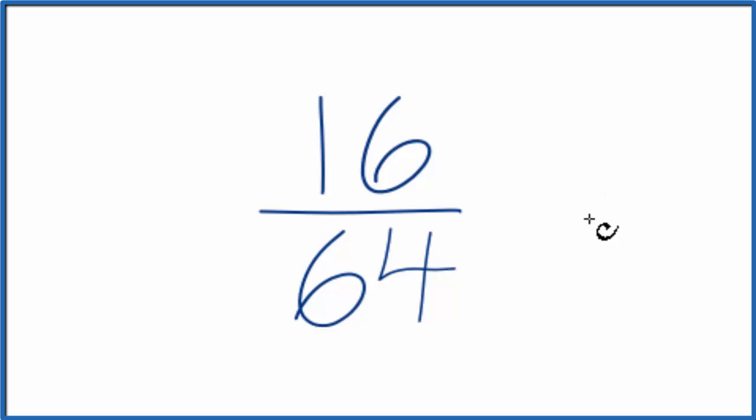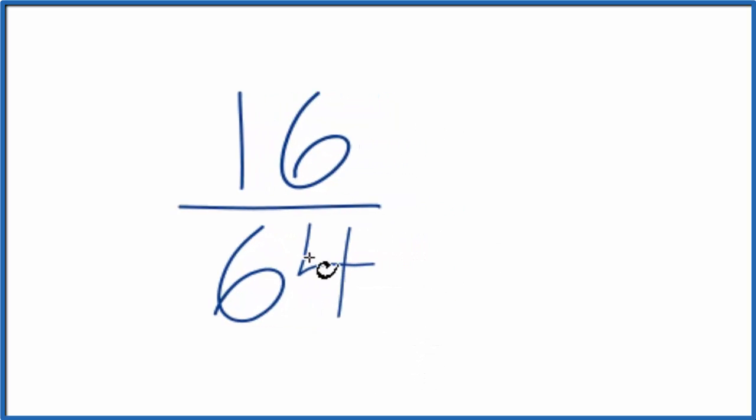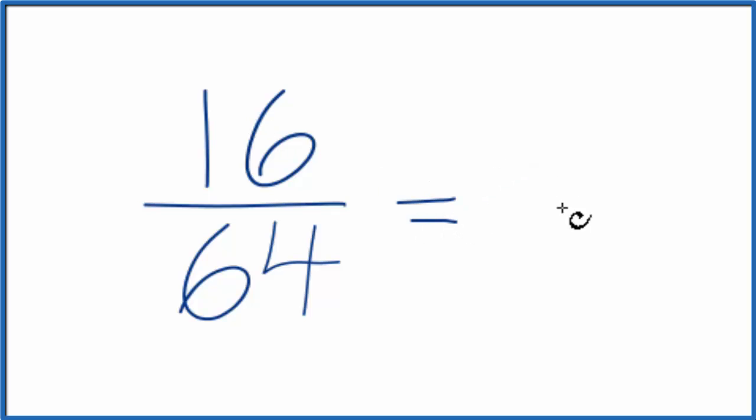So to do that, we need to find a common factor that goes in both 16 and 64. If you know that 4 times 16 is 64, you can do this pretty quickly. We divide 16 by 16, that's 1. And if you divide 64 by 16, you get 4. So 16 64ths, we can reduce or simplify that to 1 4th.